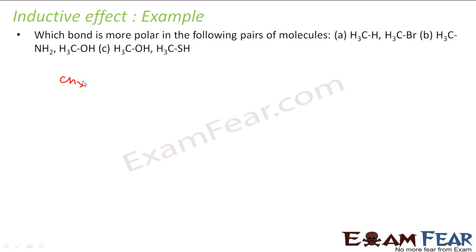So I have CH3H and CH3Br. The difference in electronegativity between carbon and hydrogen is not that much, but for carbon-bromine, bromine is more electronegative and the difference is more, so you will see an inductive effect here. Bromine will get a slightly negative charge and carbon will get a slightly positive charge.